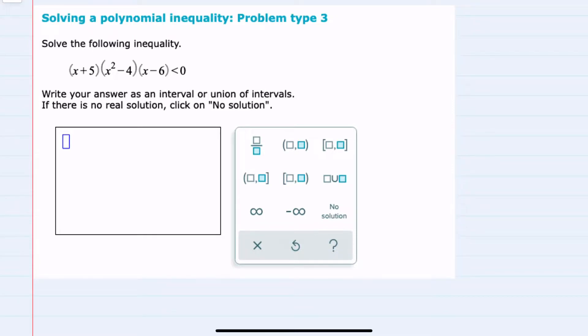We're asked to solve this inequality where we have a polynomial on the left-hand side less than zero. For previous examples, everything on the left-hand side was already factored.